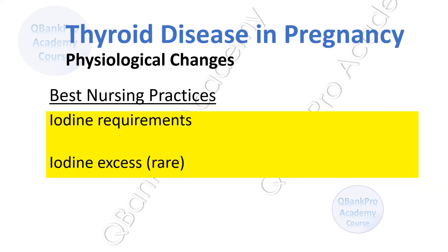Other changes in pregnancy include an increase in iodine requirements, which are higher during pregnancy. When there is a severe deficiency in iodine, there will be a reduction in maternal T4 production, resulting in inadequate transfer of maternal T4 to the fetus and severe impairment of fetal neurological development. Although rare, excessive iodine can also result in harmful effects to fetal development.